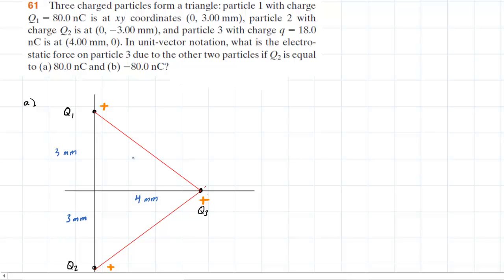We're going to need this distance right here. We're going to call it R. We could use the Pythagorean theorem. We can say that R squared is equal to 3 squared plus 4 squared, and then R squared is equal to 25, and R will equal 5. So we can label this distance as 5 millimeters, and that will be the same distance between Q2 and Q3.